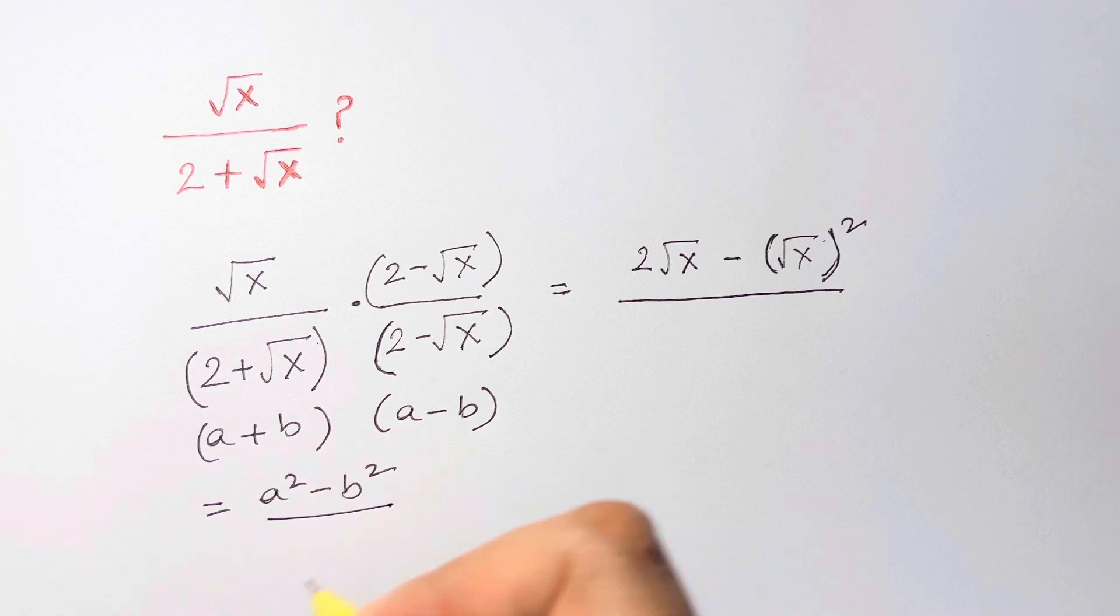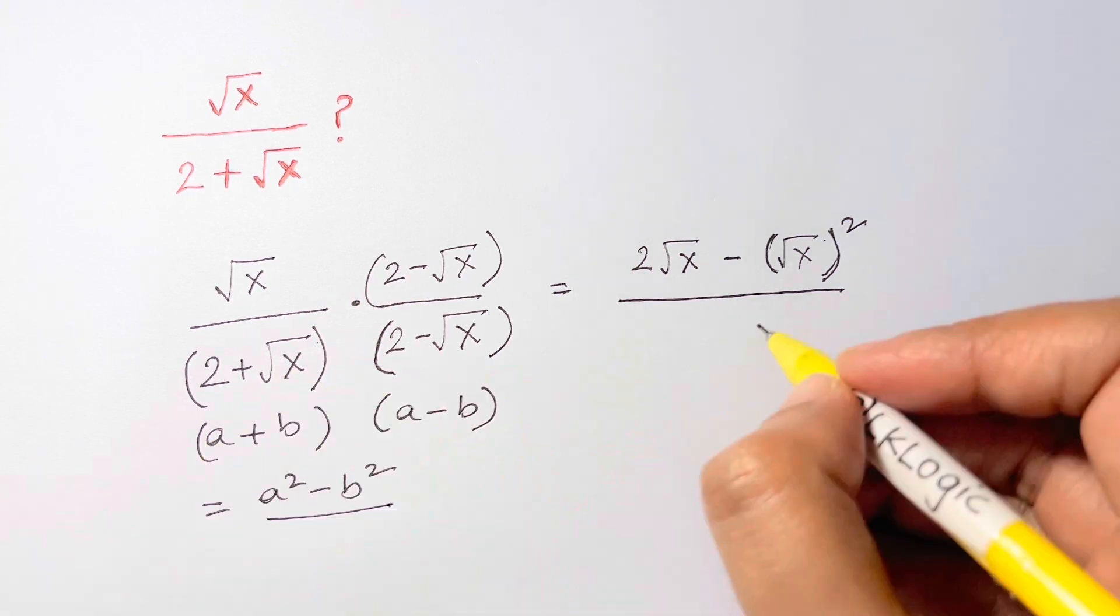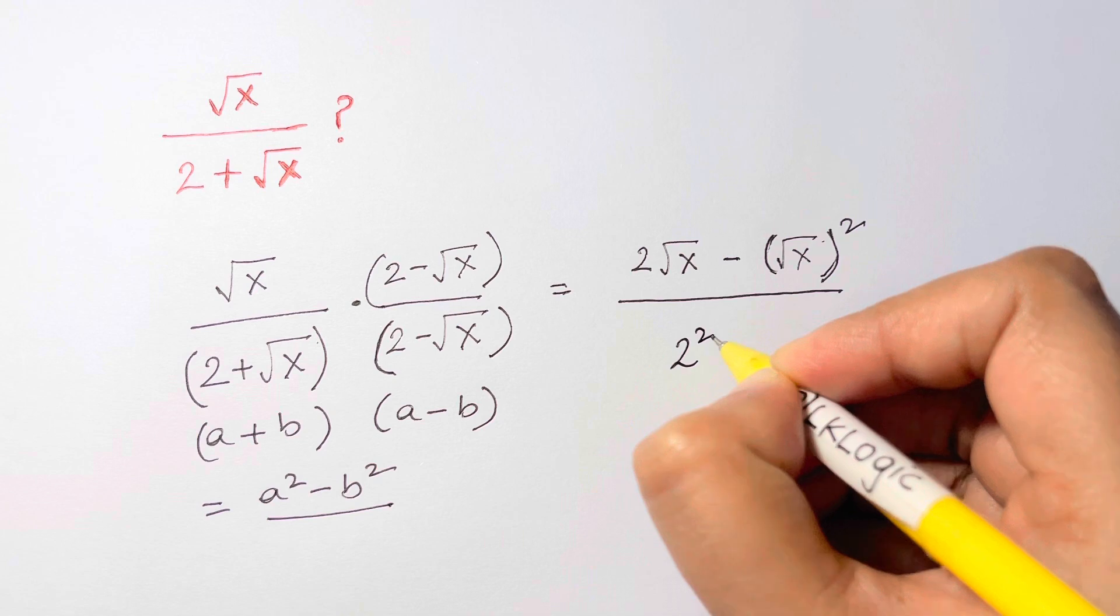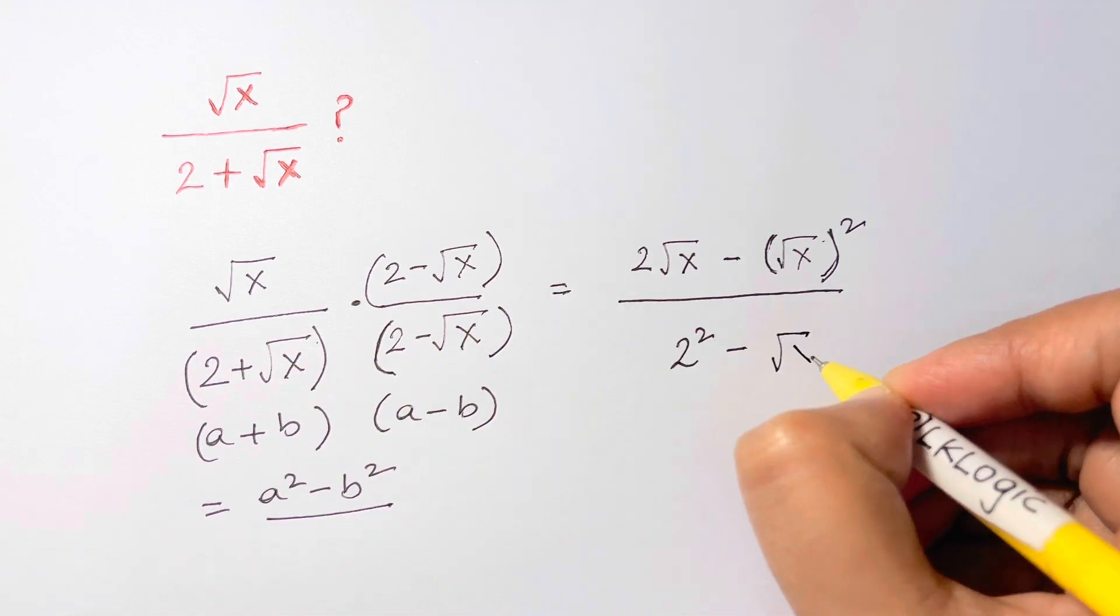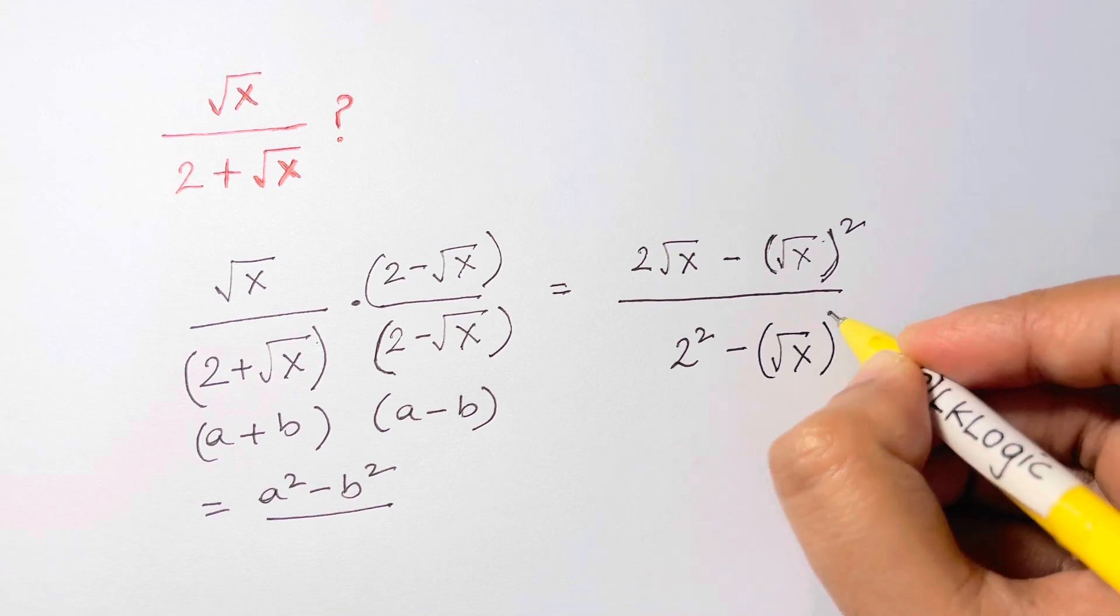That's just equal to a squared minus b squared. So what is our a? 2. So let me write down: 2 squared minus b. B is root x, and we have to square that: root x the whole squared.